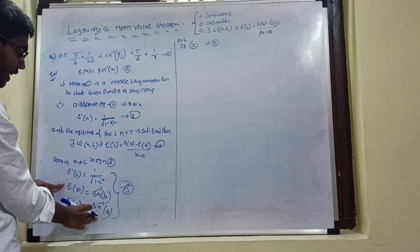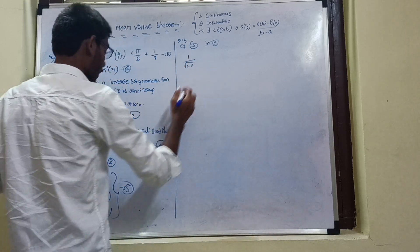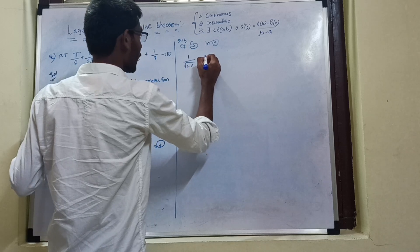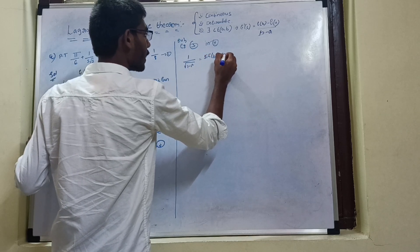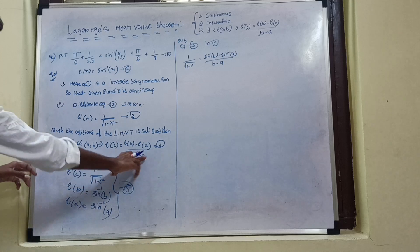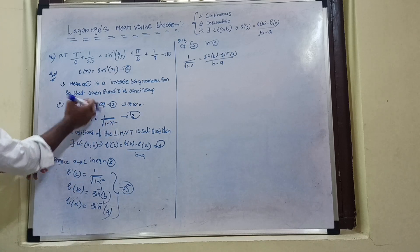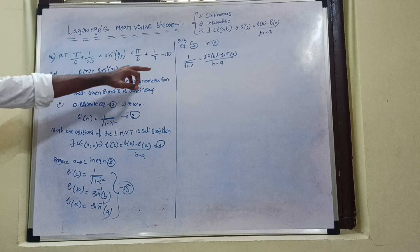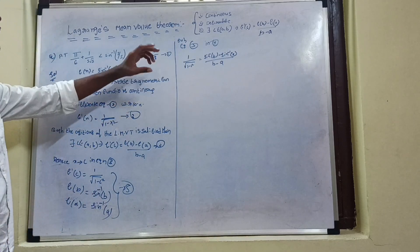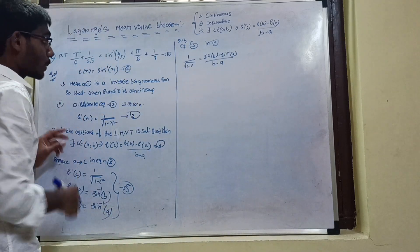So 1 / √(1 − c²) = [sin⁻¹(b) − sin⁻¹(a)] / (b − a). Substituting these values: with a, b, and c substituted, finally we get that c belongs to (a, b), and the inequalities are 50% complete. Now we enter the inequalities.